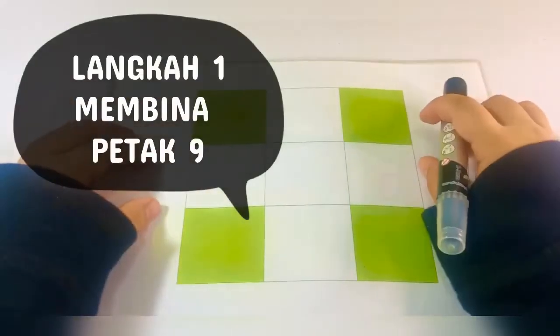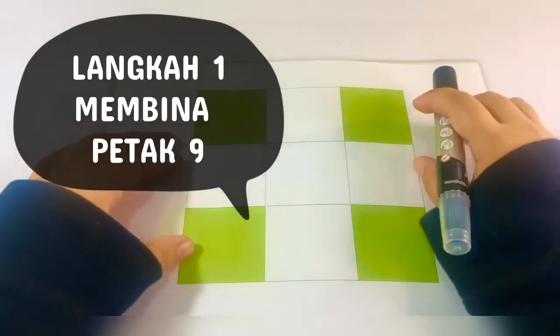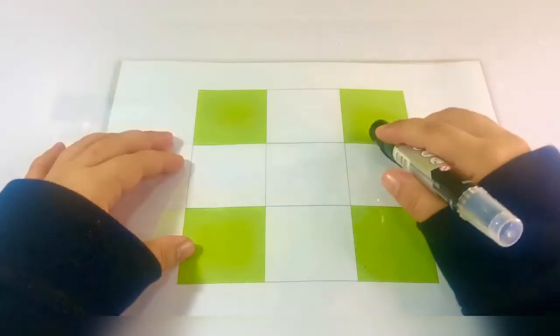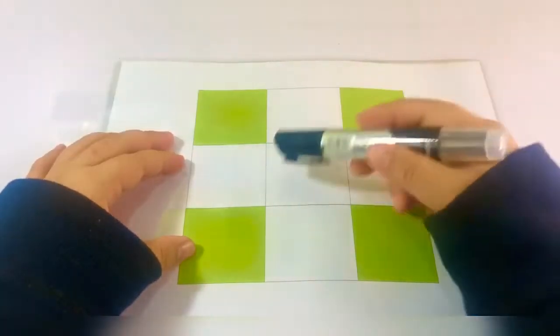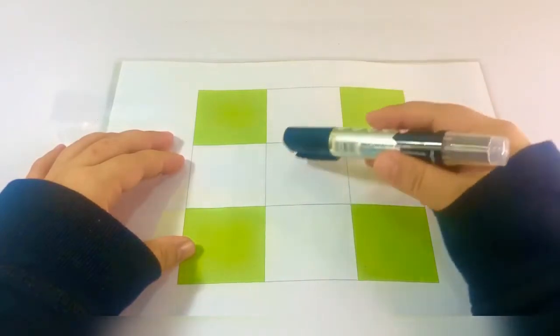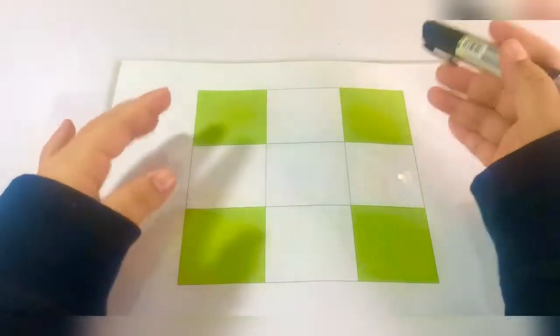Langkah yang pertama, perlu membuat 9 petak ataupun membina 9 petak untuk magic box seperti ini.